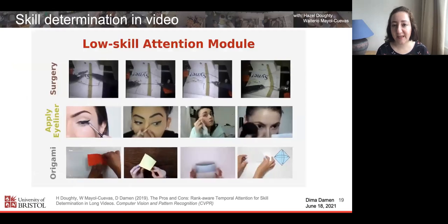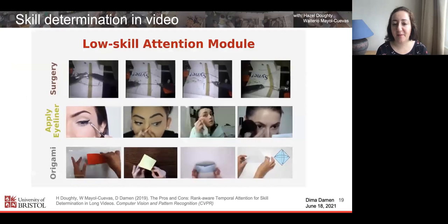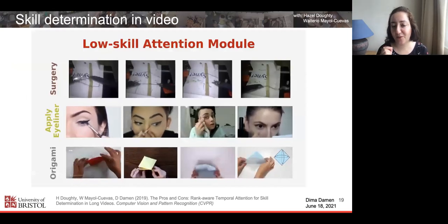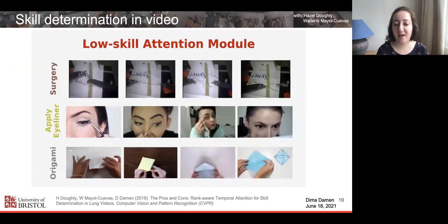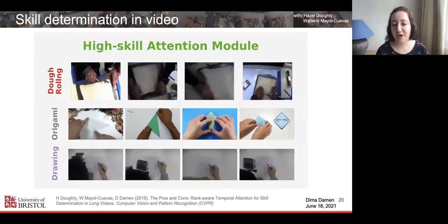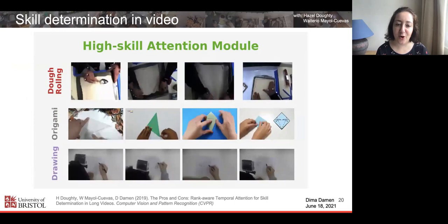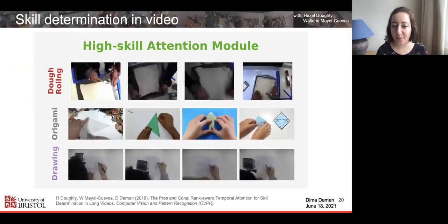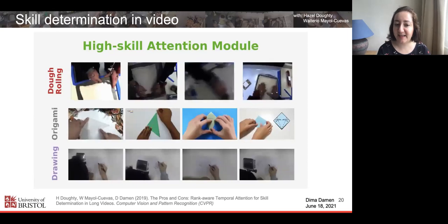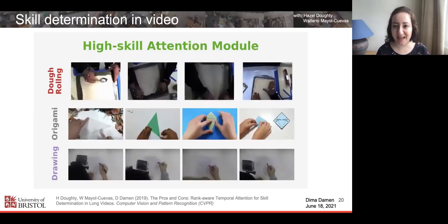For example, this is the low skill attention module in different tasks. In applying eyeliner, it is when people are removing a bit of what they've done. It had learned to pick up that this is evidence of low skill, or when people unfold in origami. In contrast, in the high skill, you have people firming their fold in origami as evidence of high skill. I very much like the last example of drawing, because this is picking hesitation or stopping as evidence of high skill in drawing, while other tasks like putting makeup, pausing is evidence of low skill.